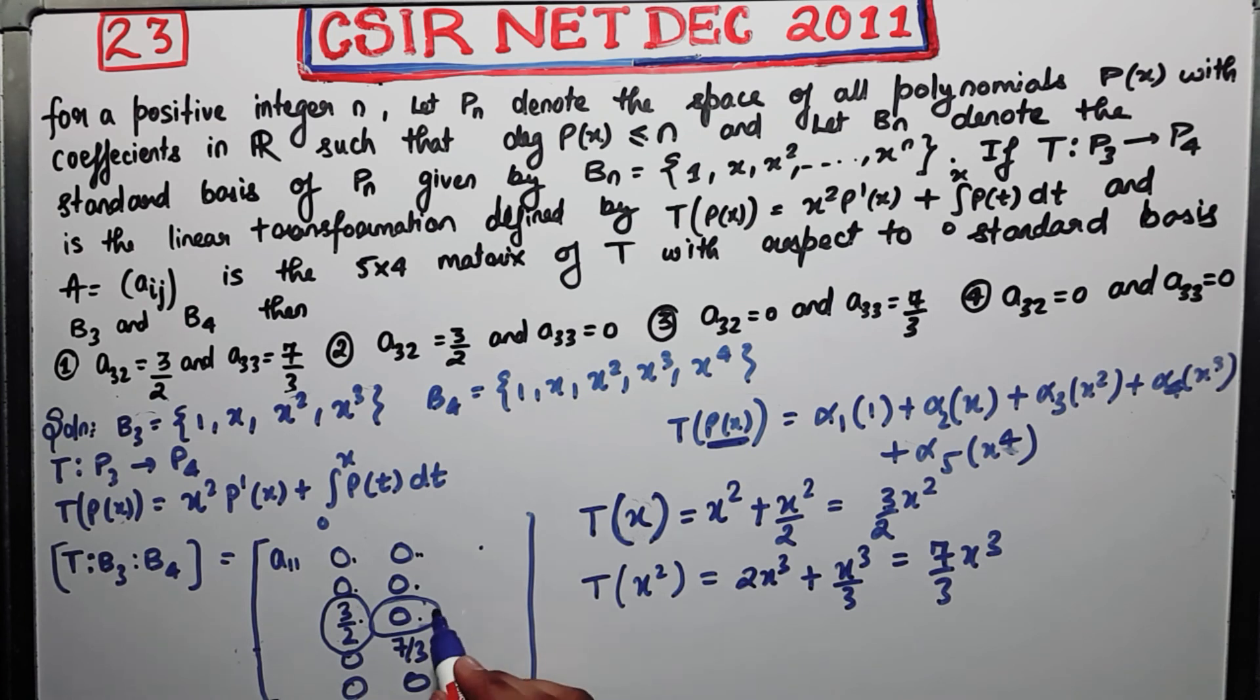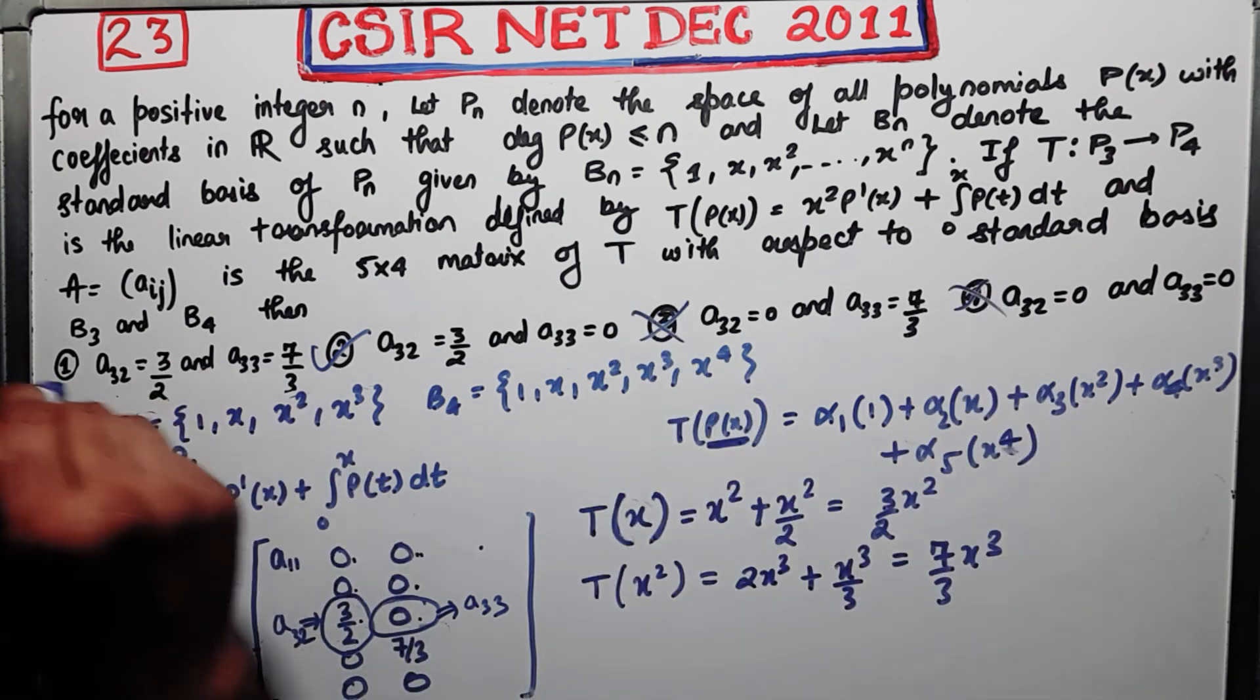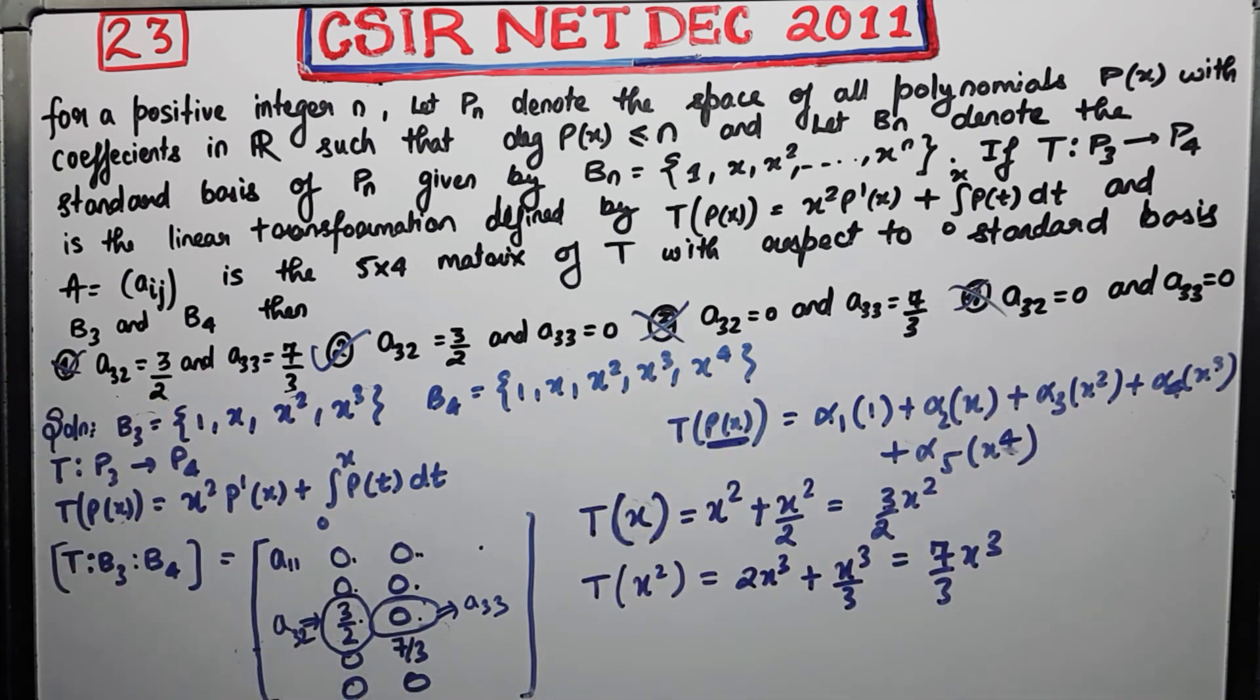So which option will be correct then? Your second option will be correct. And yeah, it's correct. So all other options are false. So this is a very easy question depending upon the matrix of the transformation, of the linear transformation that you are given with. So thank you guys.